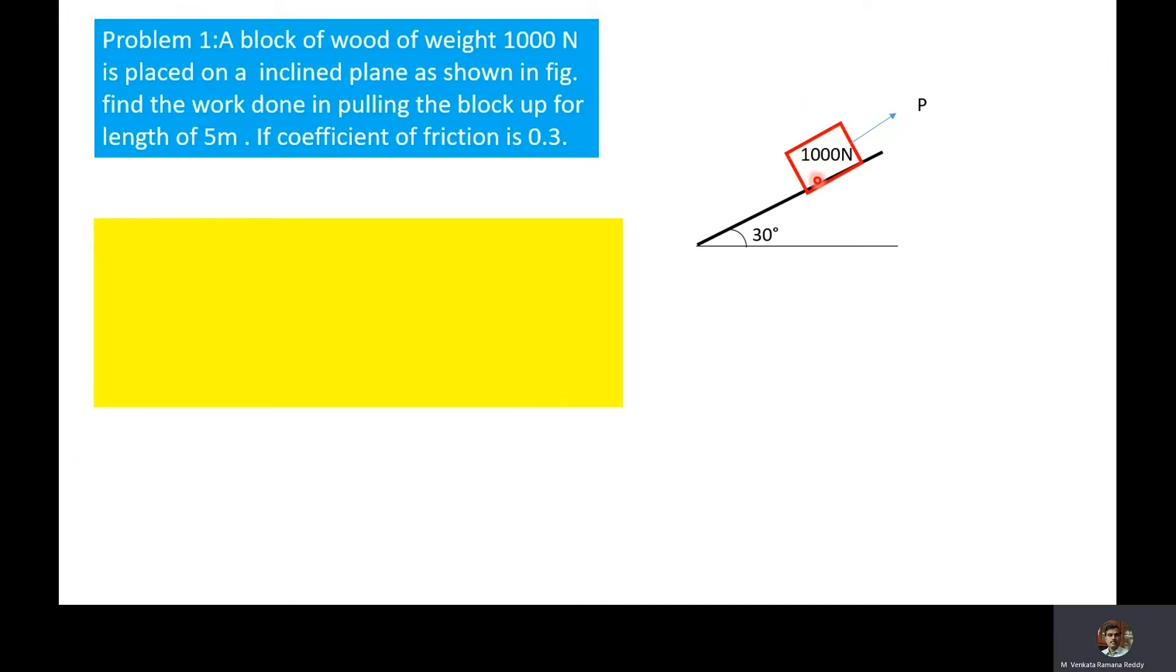Here, the wooden block is placed on an incline with an inclination of 30 degrees with the horizontal. P is the force required to pull the block up, and we have to find the work done in pulling the block up for a length of 5 meters. Now we'll write the data.